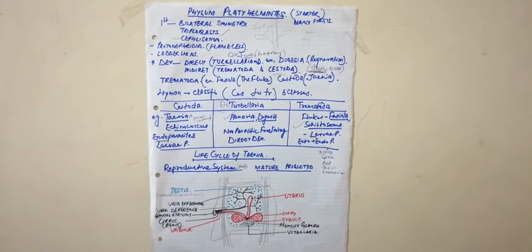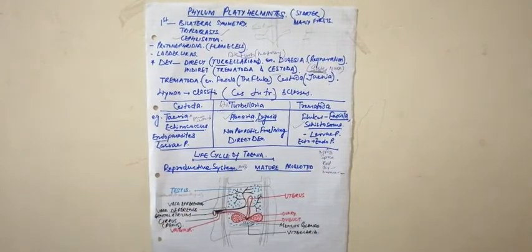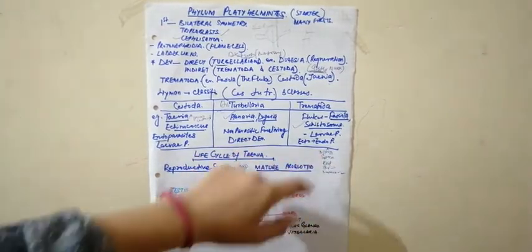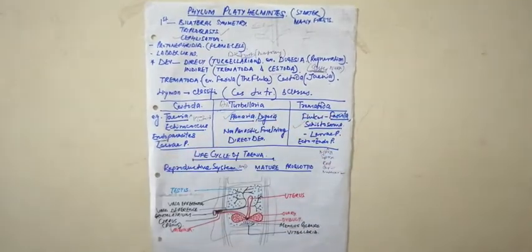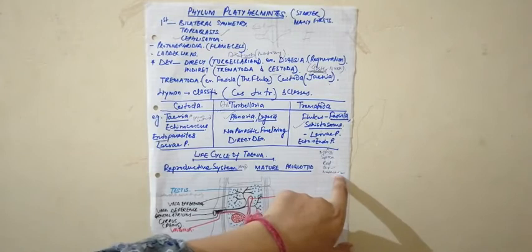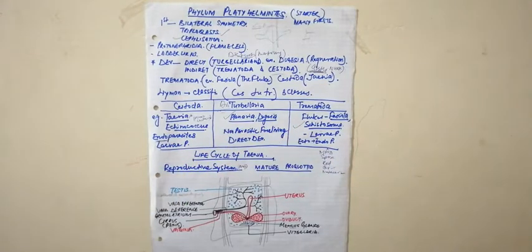Fasciola has five larval stages. You can remember them with the mnemonic: 'mira spore red cer meta cer' — Miracidium, Sporocyst, Redia, Cercaria, and Metacercaria. The infective larval stage of Fasciola in sheep is Metacercaria. For the human blood fluke Schistosoma, the infective larval stage in humans is Cercaria. This is an important MCQ from an MSc entrance point of view.